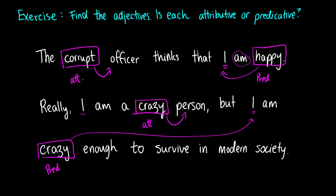Okay, crazy enough to survive in modern society. So we have the final adjective here, modern, which describes what type of society you're in. It's not an old society, it is a modern society. So here we have three attributive adjectives and two predicative adjectives. And that's it for adjectives. If you have any questions, please leave them in the comments below, and I will do my best to answer them.